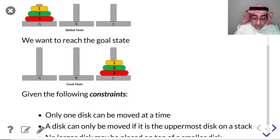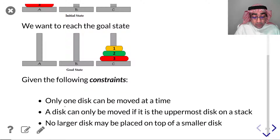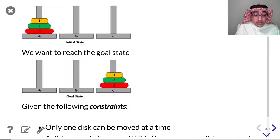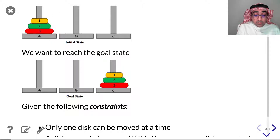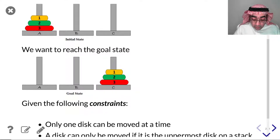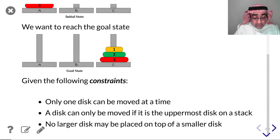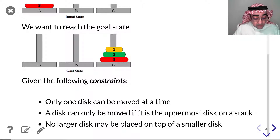What are the constraints? First, only one disk can be moved at a time. So if you start from here, you can only move one disk at a time — you can take disk number one, for example, to B or to C, and that's your move. You cannot move more than one disk in one step; then you can have the next step and the step after that.